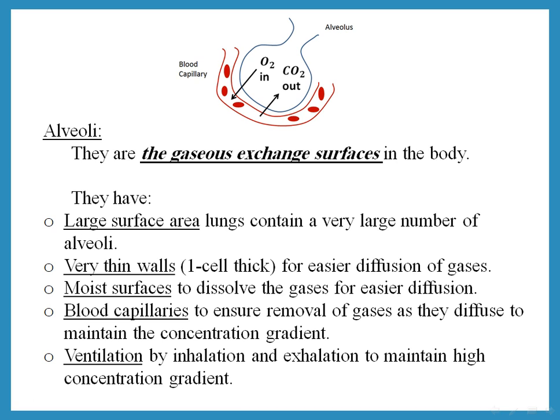The alveoli are adapted to their function as gaseous exchange surfaces. They have a large surface area because there are very large numbers of alveoli in each lung. They have very thin walls to allow gases to diffuse easily into and out of the blood. They have moist surfaces, which also aids diffusion. Blood capillaries bring blood to and take blood away, maintaining the diffusion concentration gradient.